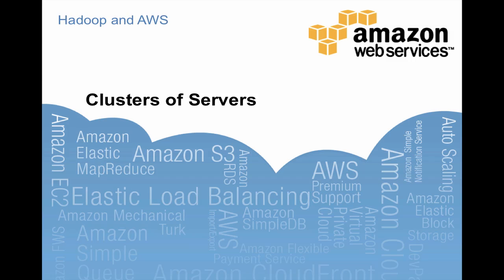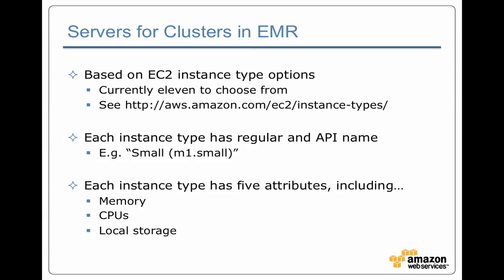In this module we're going to be taking a look at the different kinds of servers that you have available to use for your Hadoop cluster. All these servers that are part of an Elastic MapReduce cluster are based on EC2 instance types, and you've got 11 different types to choose from. There is a list of them available online at aws.amazon.com EC2 instance types.